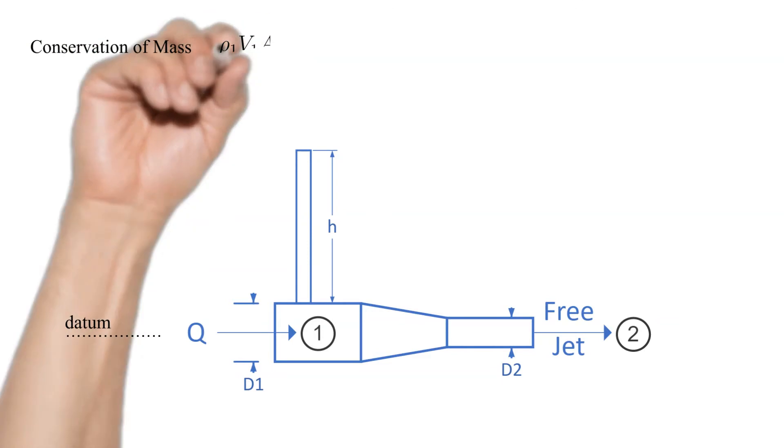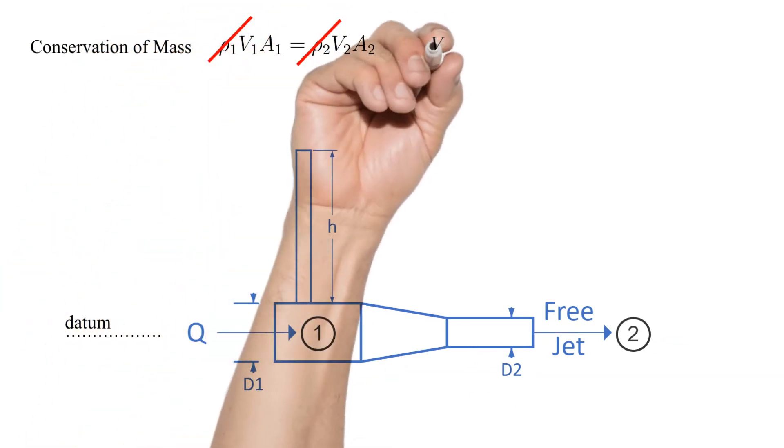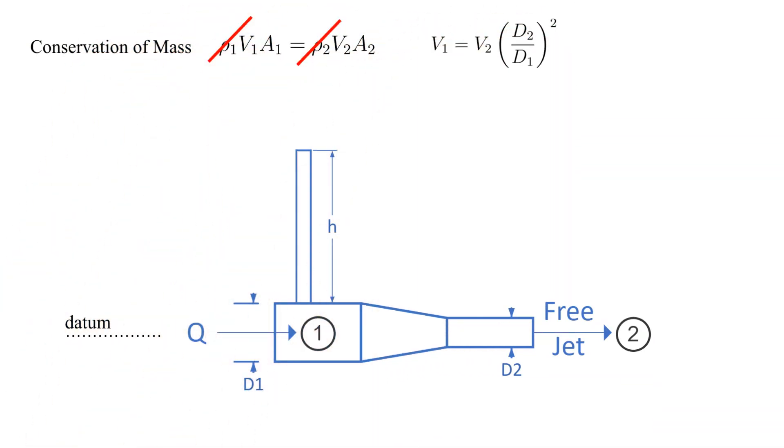Let's start with conservation of mass. The fluid is incompressible water so we can cancel the densities and solve for the velocity V1 in terms of V2 and the diameters at 1 and 2.